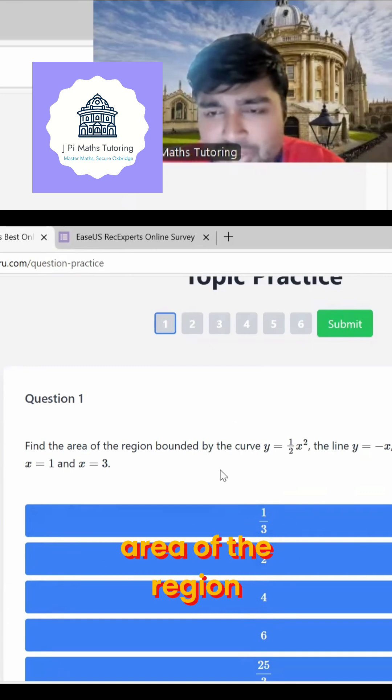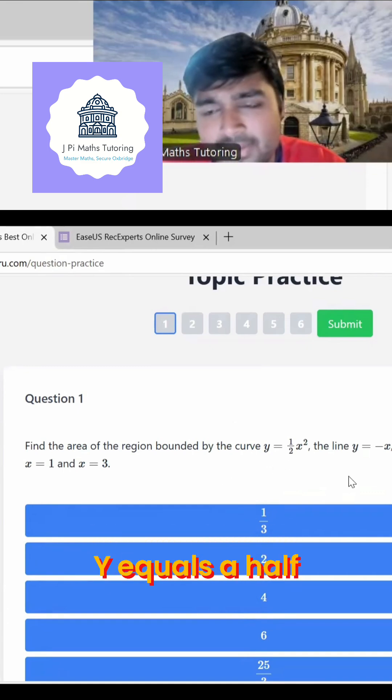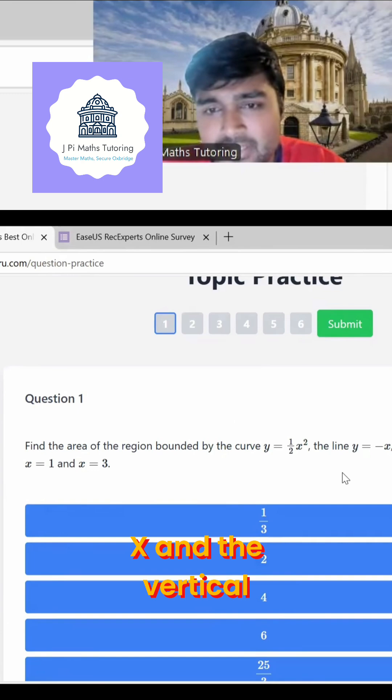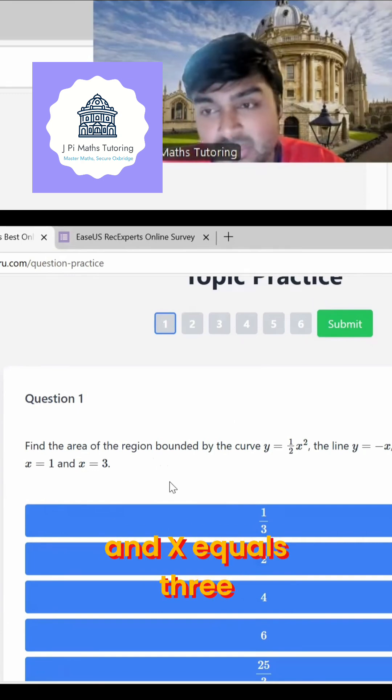So we want to find the area of the region bounded by the curve y equals a half x squared, and the line y equals minus x, and the vertical lines x equals 1 and x equals 3.